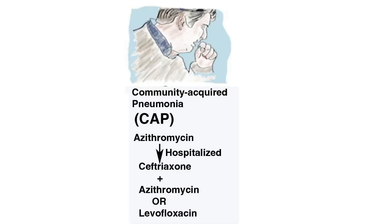For mild or walking pneumonia, azithromycin alone is recommended because it offers reasonable coverage for all the primary pathogens. For patients who require hospitalization, a combination of azithromycin and ceftriaxone is recommended. In hospitalized patients, levofloxacin also offers reasonable coverage for all of these pathogens and is an alternative treatment, but its broad spectrum increases the risk of selecting for multi-resistant bacteria.